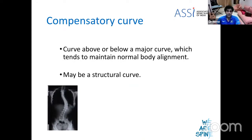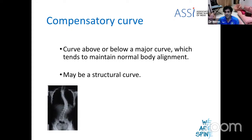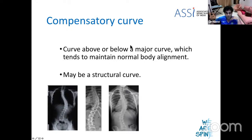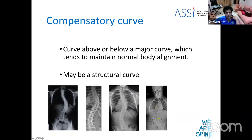Compensatory curves are the ones that come into play to maintain the head on the plumb line when there's a strong structural curve. It's a curve above or below the main or major curve, formed to maintain the normal body alignment. Eventually a compensatory curve could itself become a structural curve — if it has been there for a long time it may develop its own changes, exceed a certain degree, and stop bending symmetrically. All compensatory curves start off as non-structural but may end up as structural curves.